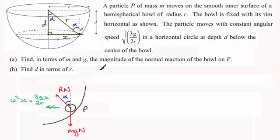So when it comes to the first part of this question, finding the magnitude of the normal reaction of the bowl on P in terms of m and g, we've got to look at r. What we need to do is resolve in towards the center of the circle. So for part a, if we resolve in towards the center, we're going to have r sine alpha as the component of r acting towards the center.